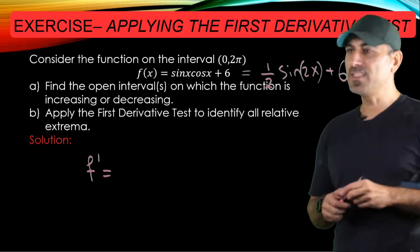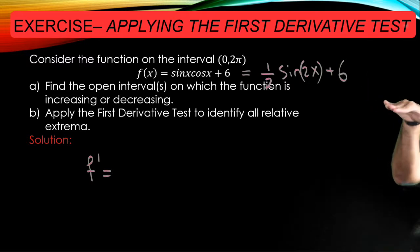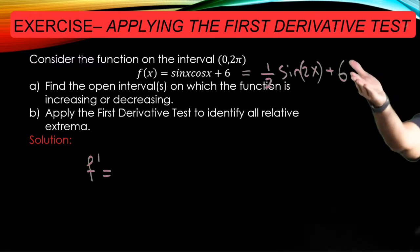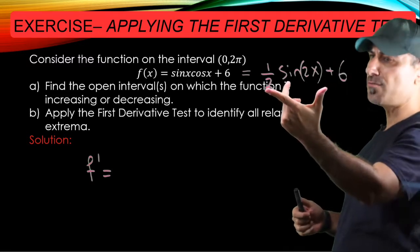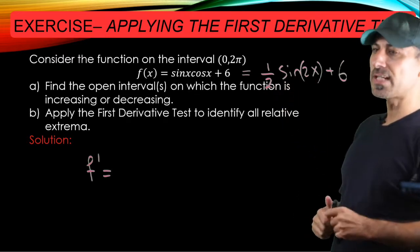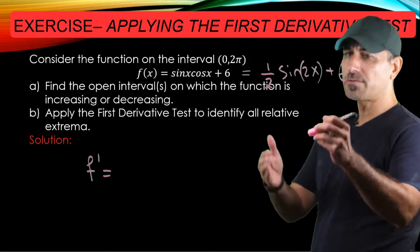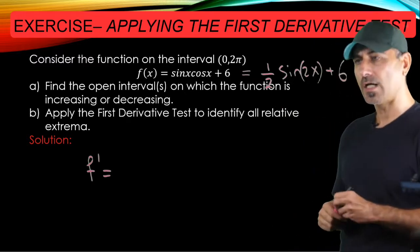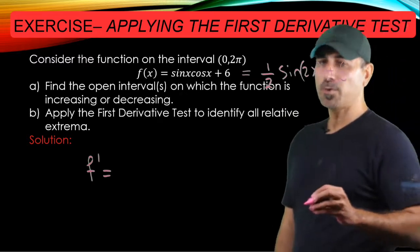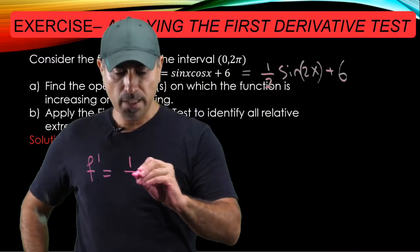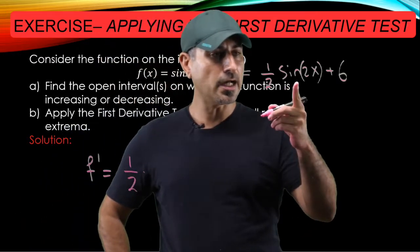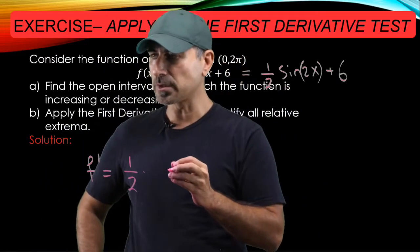So instead of dealing with the product sine x cosine x, why don't we have just one sine function and worry about the derivative of that function. In fact, the derivative of that function requires the use of a chain rule. And if you apply the chain rule to that, one half times the derivative of the outer function, which is just the derivative of sine. So cosine 2x.